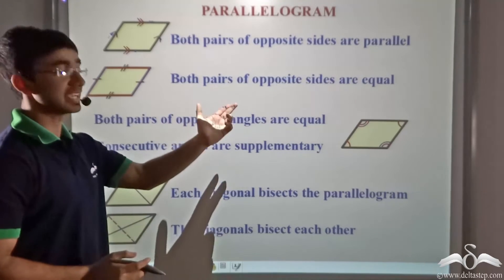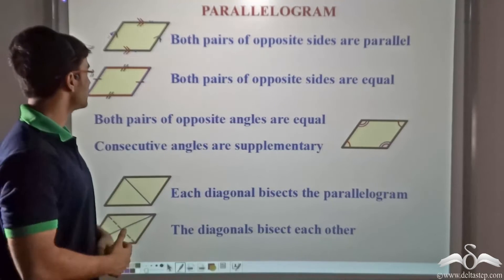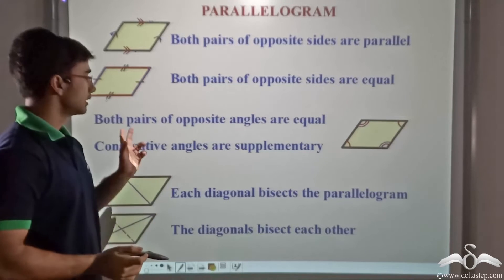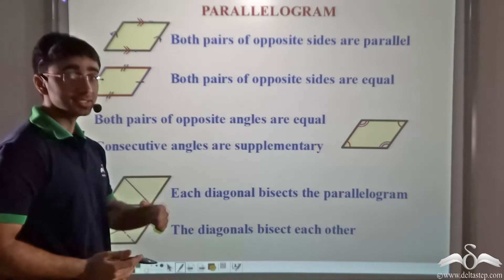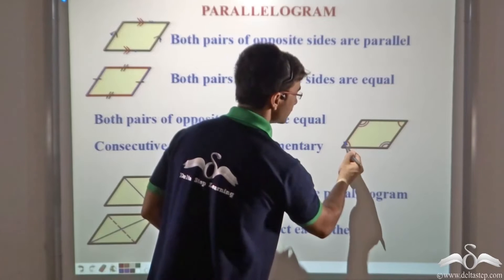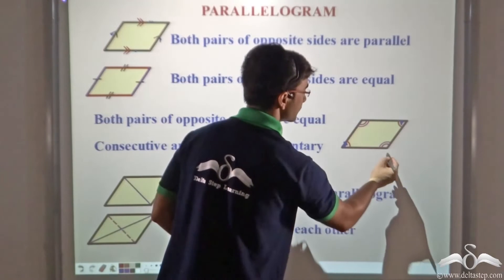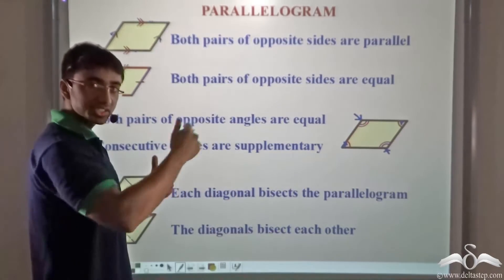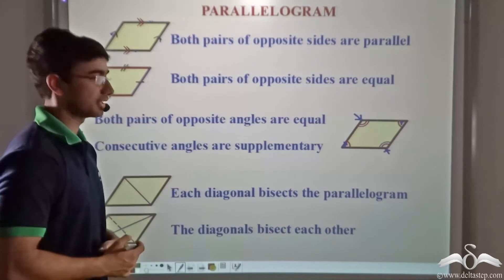Both pairs of opposite sides are equal. In a similar manner, if you consider opposite sides, they will be equal to one another. Both pairs of opposite angles are equal. That is, this particular angle is equal to this angle, and this angle is equal to this angle because they are opposite to one another inside the parallelogram.